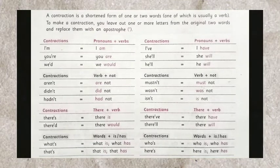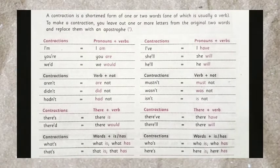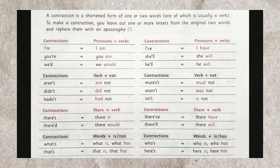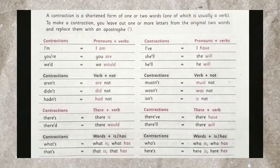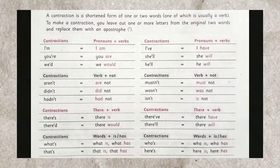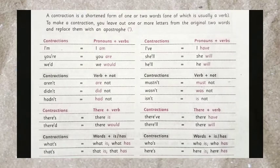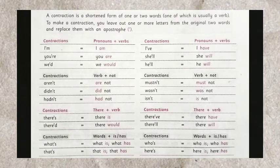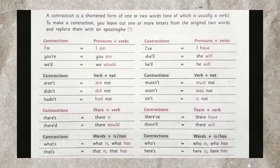Our next topic is contractions. A contraction is a shortened form of one or two words. To make a contraction, you leave out one or more letters from the original two words and replace them with an apostrophe. Let's look at some examples: I'm - I am; I've - I have; You're - You are; Aren't - Are not; Didn't - Did not; What's - What is or what has; That's - That is or that has; Who's - Who is or who has; Here's - Here is. Contractions are very easy. You can also learn from your notes.